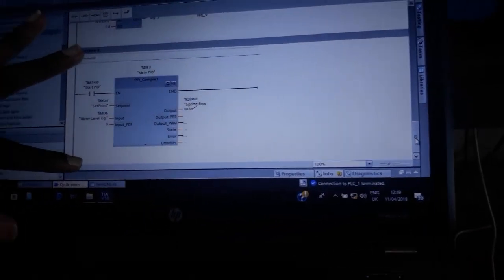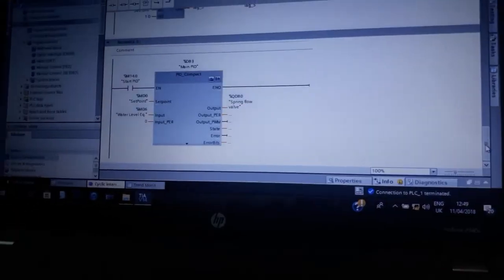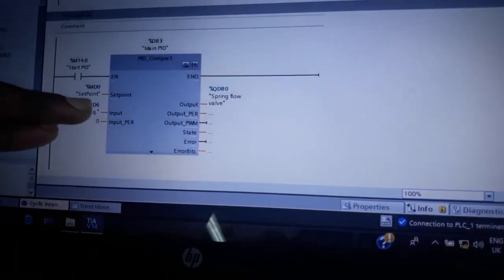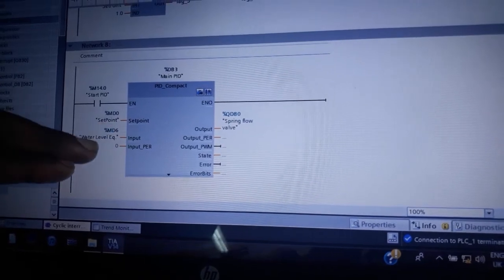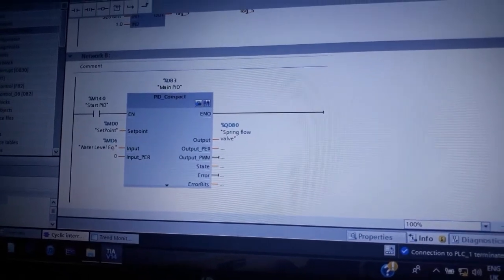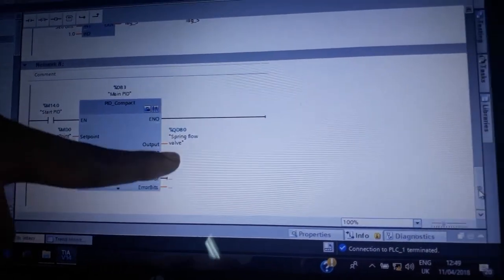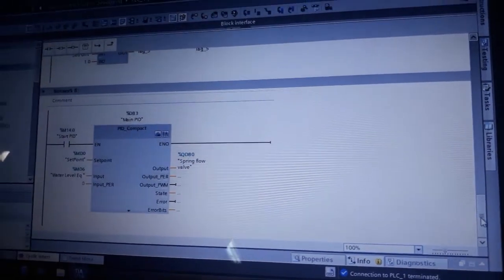Then this is our main network. From the network, there is the setpoint and the water level equivalent. All this can be seen and altered from the HMI, and our output is the diaphragm flow valve.